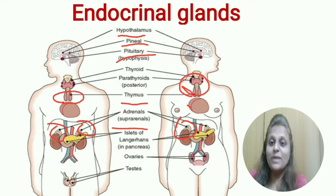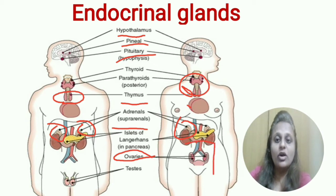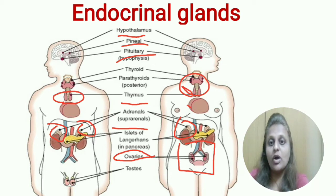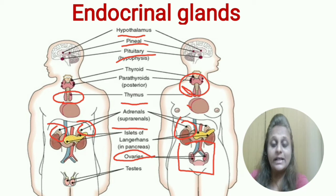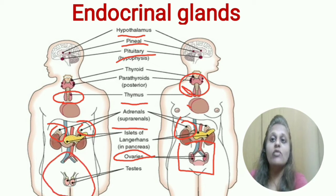The ovaries are present only in the female reproductive organ, and they secrete sex-connected reproductive hormones like estrogen and progesterone. The testes are the male gland.